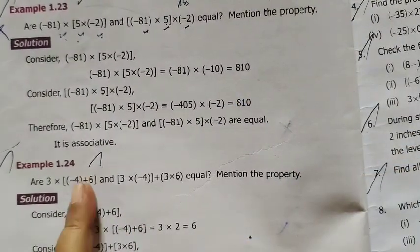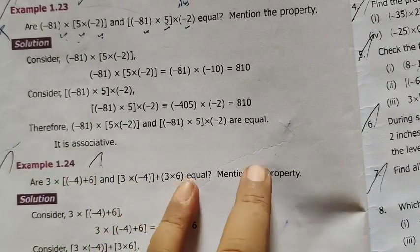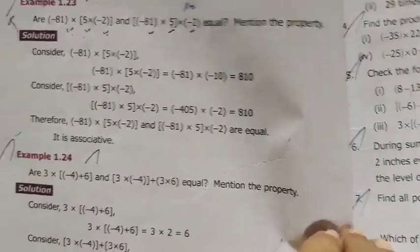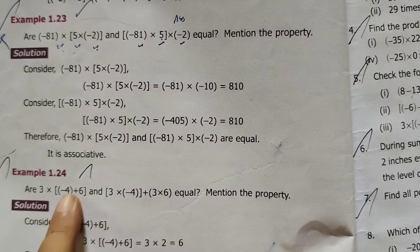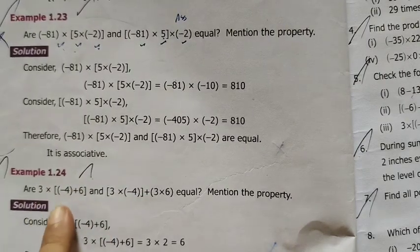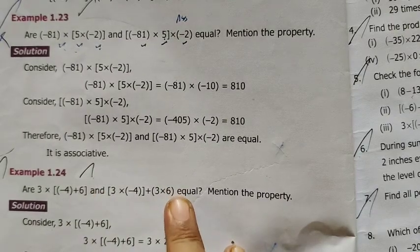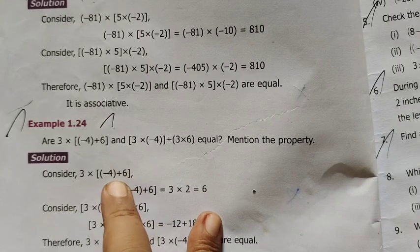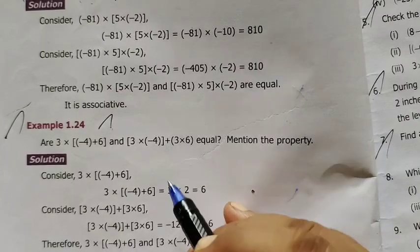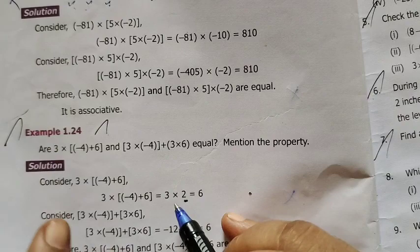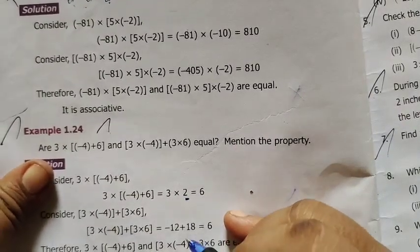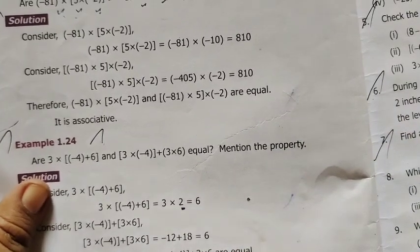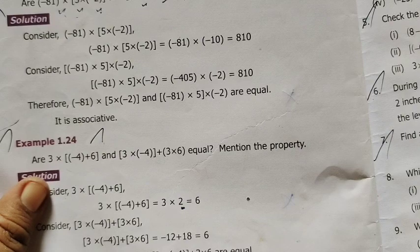Example 1.24. 3 into this. If you are doing the distributed property, this is the distributed property. Now, how do you distribute the property? 3 times this is equal to this value. Equal space for each part, add this value. 6-4 is 2. This is 3 into 2.